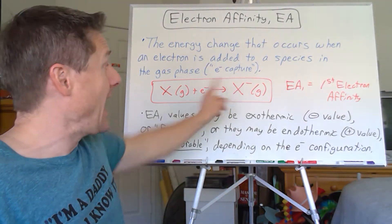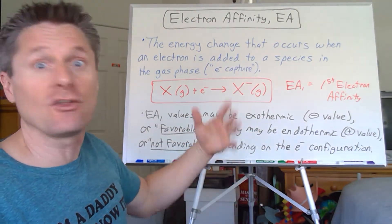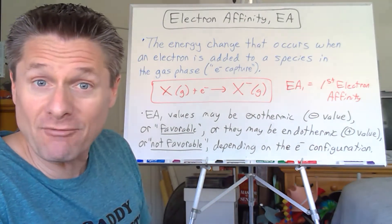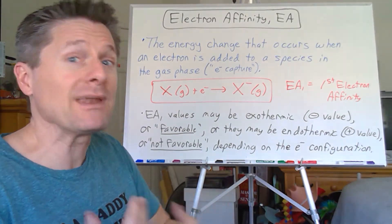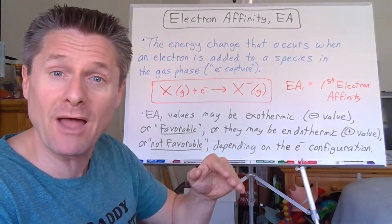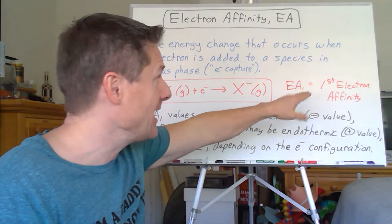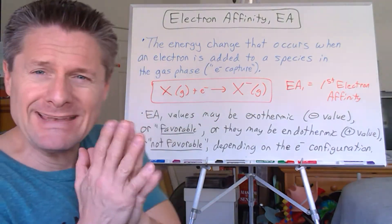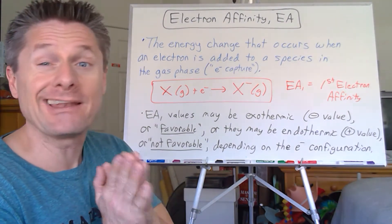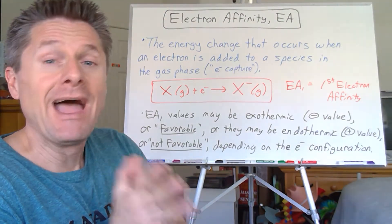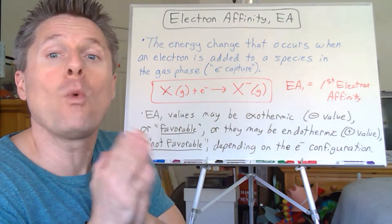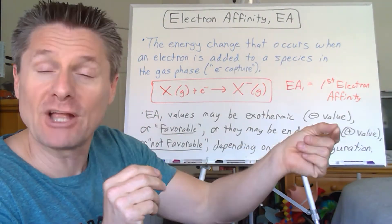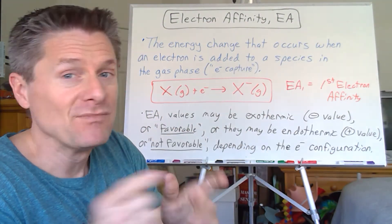So we can add another electron — we could add two electrons, we could keep adding electrons. But it takes a tremendous amount of energy, and we'll talk about EA2s and EA3s on the next board. The main difference between electron affinity and ionization energy: ionization energies are always endothermic, always positive, because you're popping a negative electron from a positive charged nucleus.